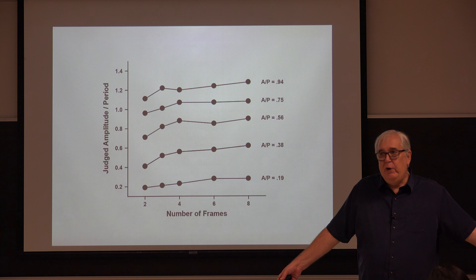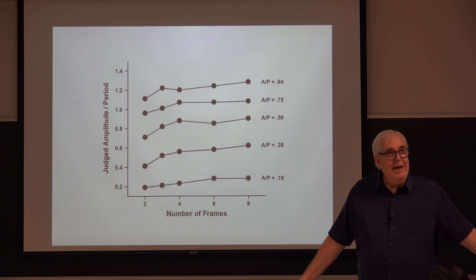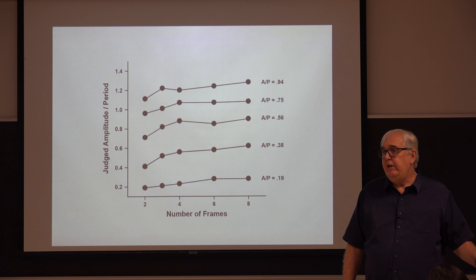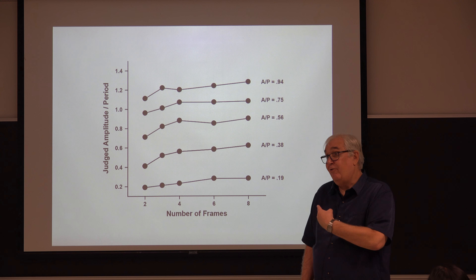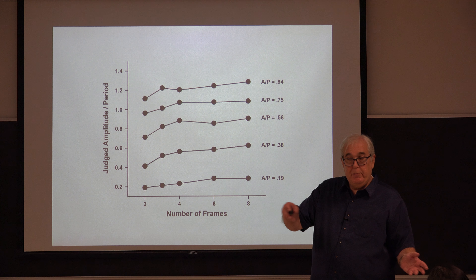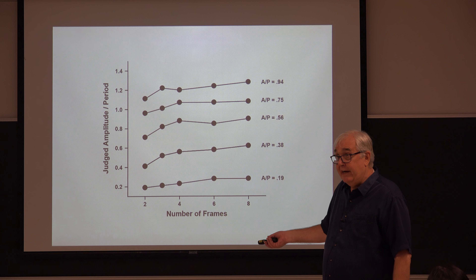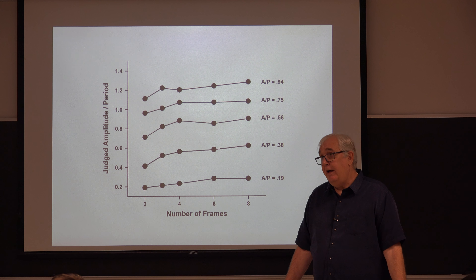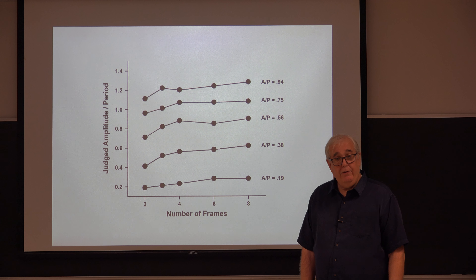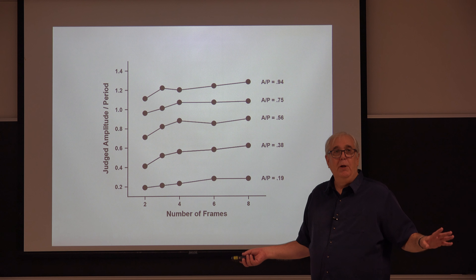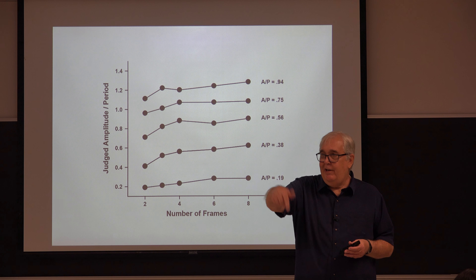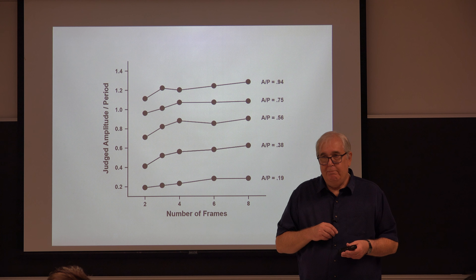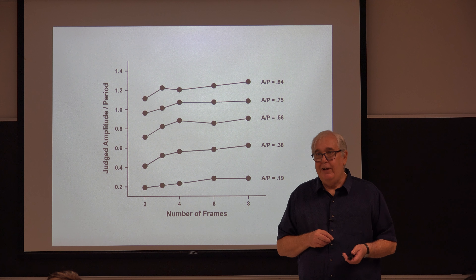What do we do with this? The main conclusion is that whatever observers are doing, they're not judging metric structure — even though the task is a metric structure task. They're asking subjects to compare lengths in different directions. They're clearly not using Ullman's model. After wrestling with this, I changed the question: rather than asking how many views do I need to calculate metric structure, I changed it to — what can I calculate from two views?